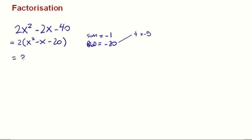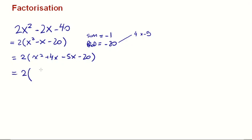So we can rewrite this with a 2 in front — the 2 that we had before — and now all of this can be broken into x squared plus 4x minus 5x minus 20. So 4x minus 5x is negative x. Here, x squared plus 4x gives us x times x plus 4 — we have factorized x, which is our common factor.